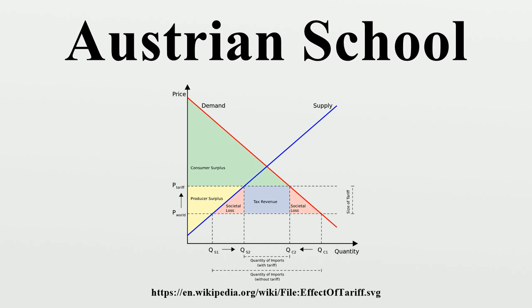Böhm-Bawerk's theory equates capital intensity with the degree of roundaboutness of production processes. Böhm-Bawerk also argued that the law of marginal utility necessarily implies the classical law of costs.